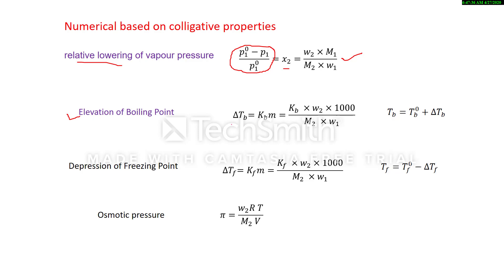Elevation of boiling point: delta Tb is equal to Kb·m. If you put the value of m (molality), you will get the formula. Tb, the boiling point of solution, equals the boiling point of solvent plus the elevation of boiling point. Next, depression of freezing point: delta Tf is equal to Kf·m. If you put the value of molality, you get the final formula, and Tf, the freezing point of solution, equals the freezing point of solvent minus the depression of freezing point.